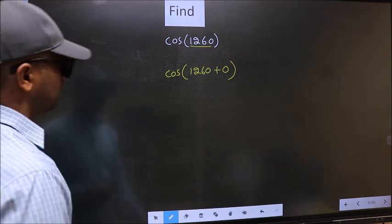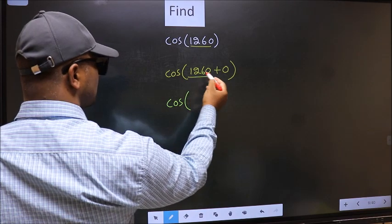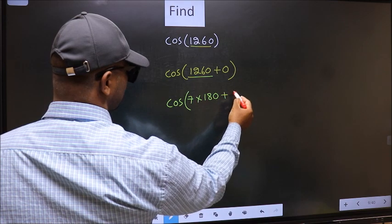Next, cos of this, now we should write 7 times 180 plus 0.